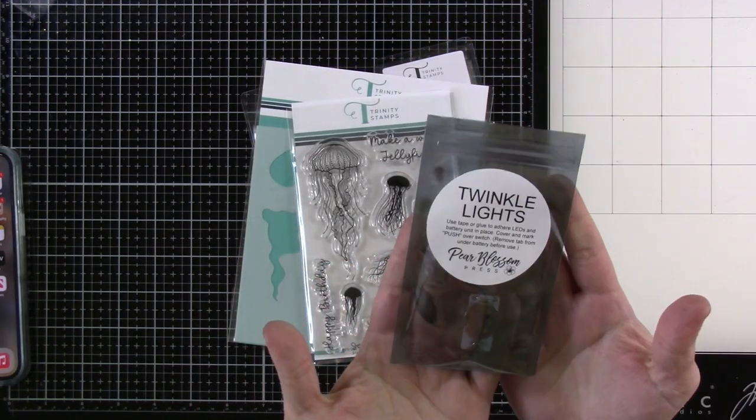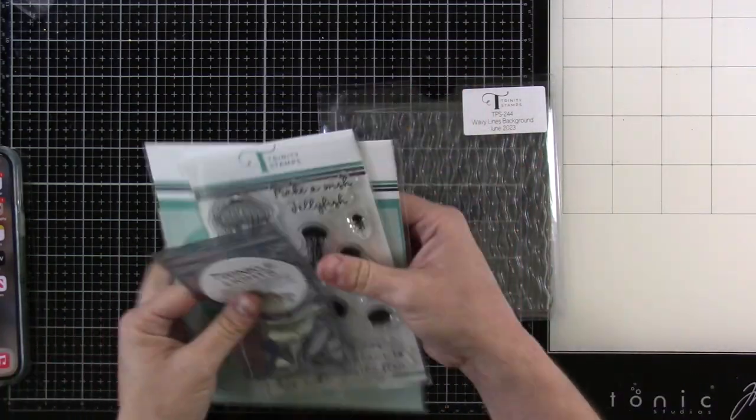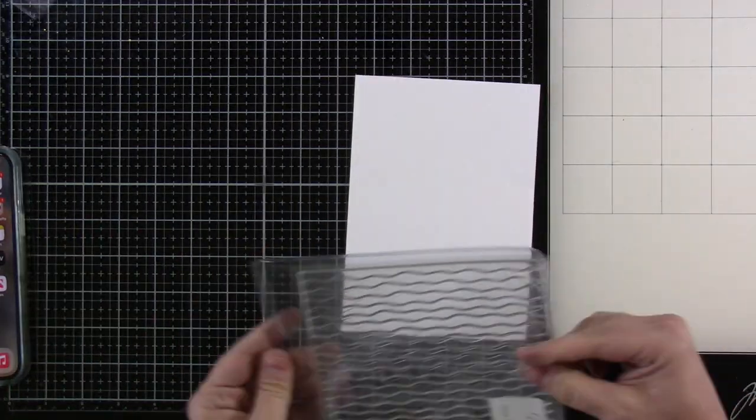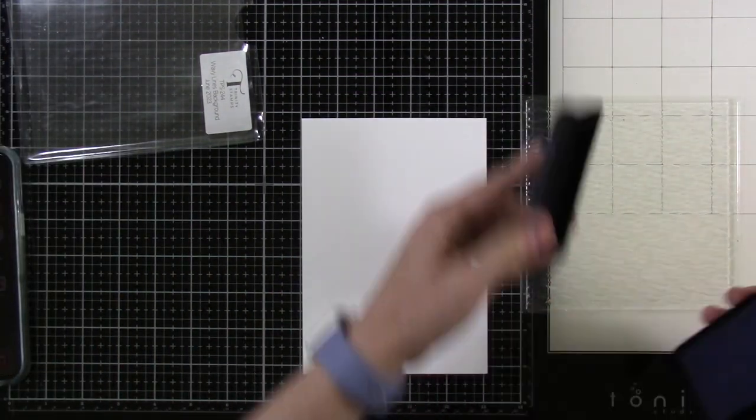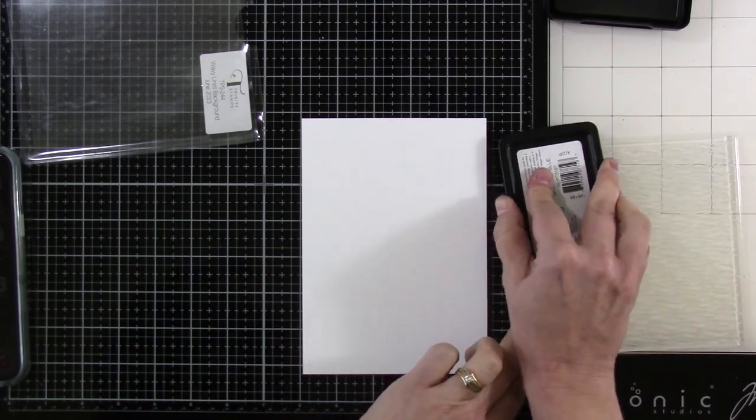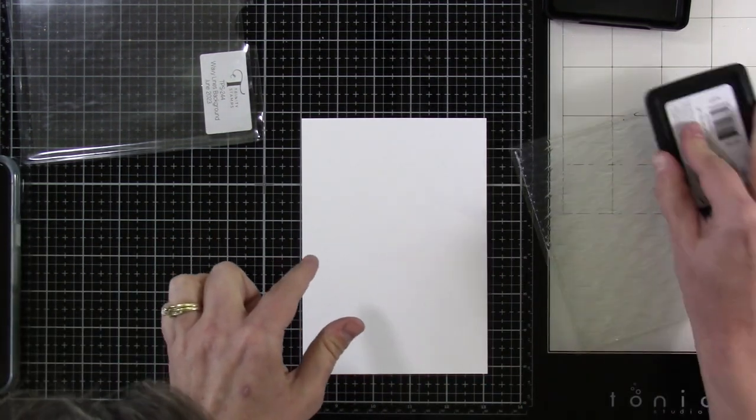We're going to be using the twinkle lights from Pear Blossom Press and if you haven't used those before, you're going to want to get your order in because you can start working on your Christmas in July type stuff. We're not making a Christmas card today. There are lots of uses for these twinkle lights but I always think of Christmas when I think of these.